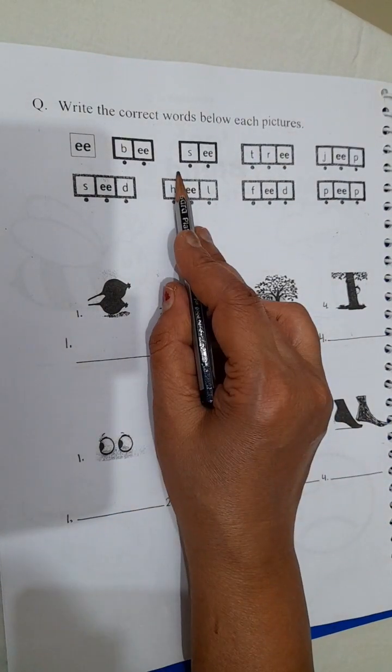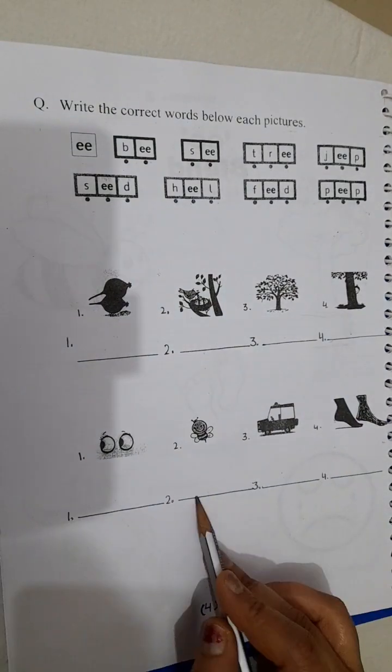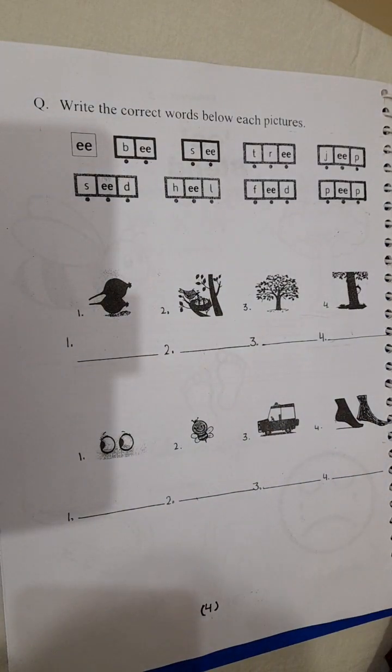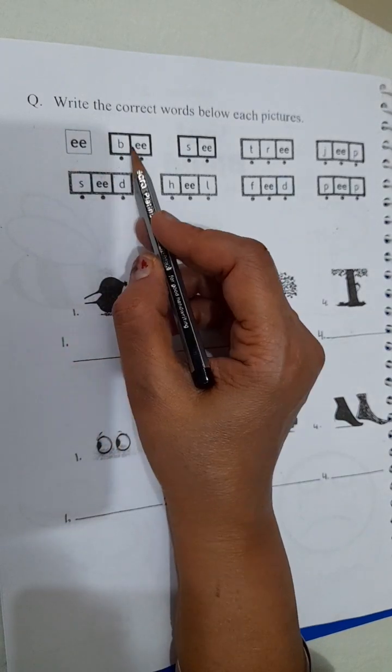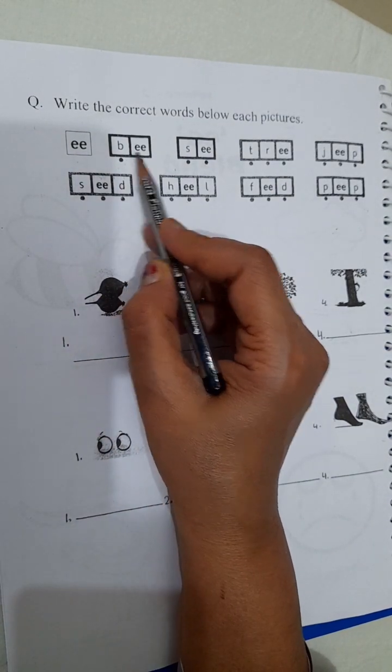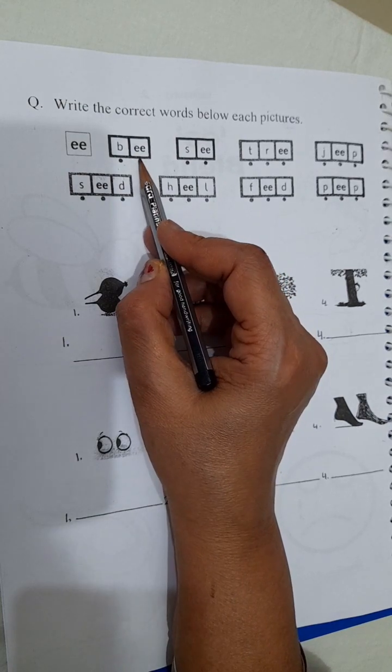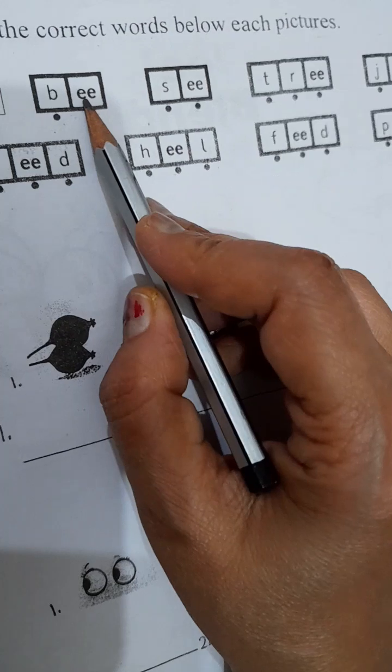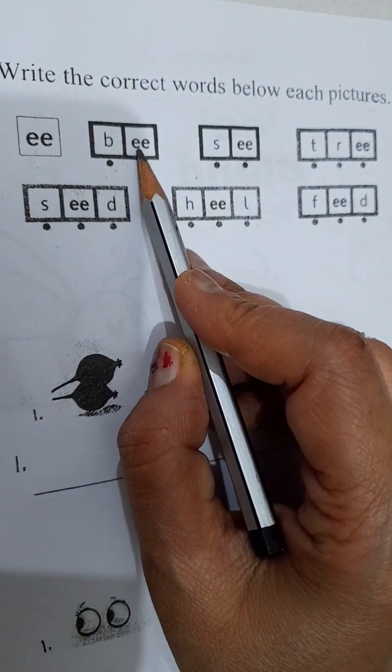Aap yahaan se words pick kareenge aur ye pictures ke niche likhayenge. Okay, double e blend hai. So, can you read this word? B, E, E. What word is this? Bee. This we have already seen.